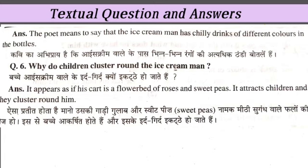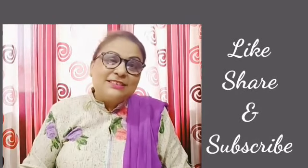Question 6: Why do children cluster around the ice cream man? It appears as if his cart is a flower bed of roses and sweet peas, which attracts the children — just like flowers attract the honeybees. That's all for this poem. If you are new to my channel, click the like and subscribe button and hit the bell icon to get the latest notifications.